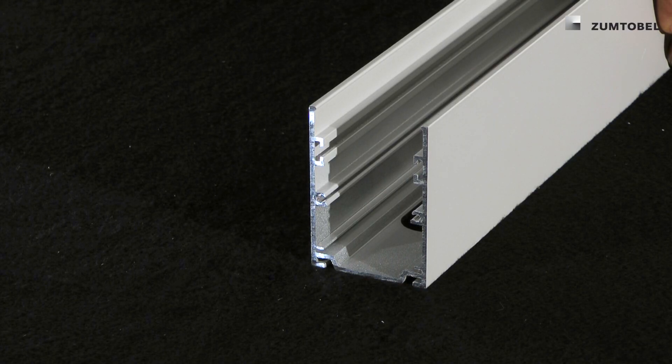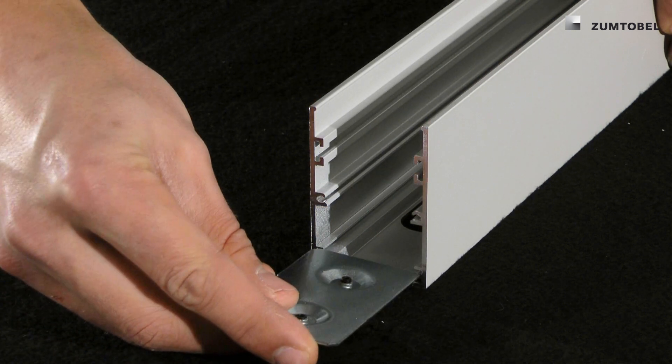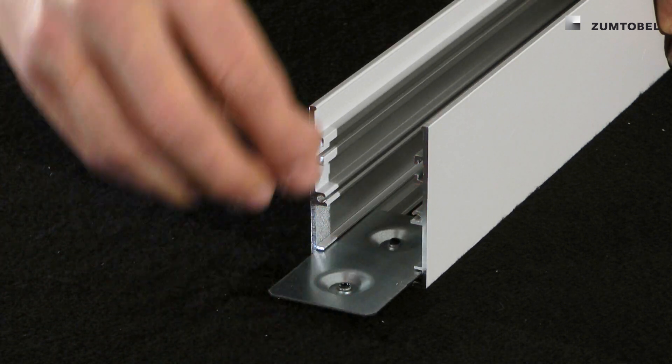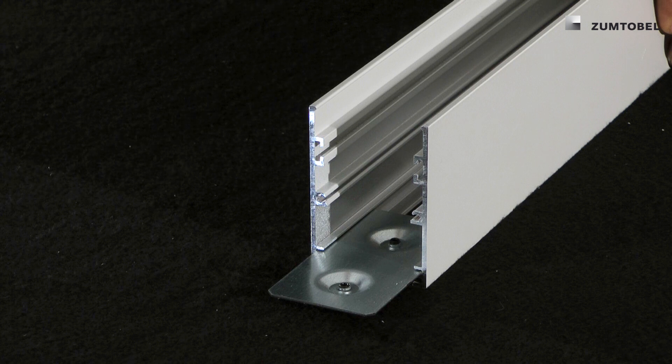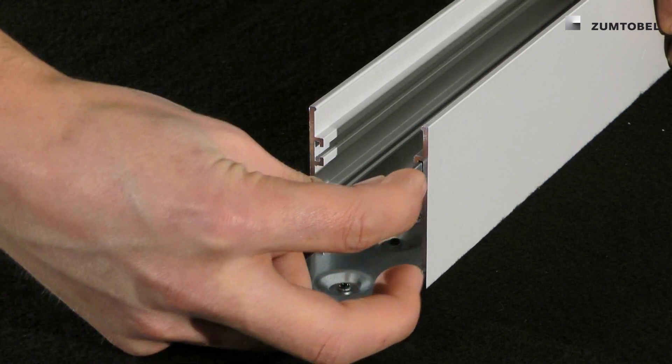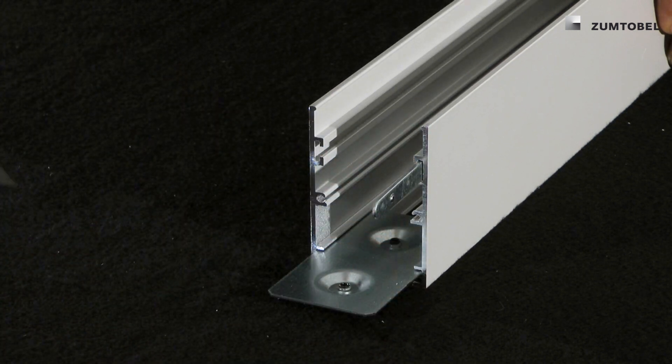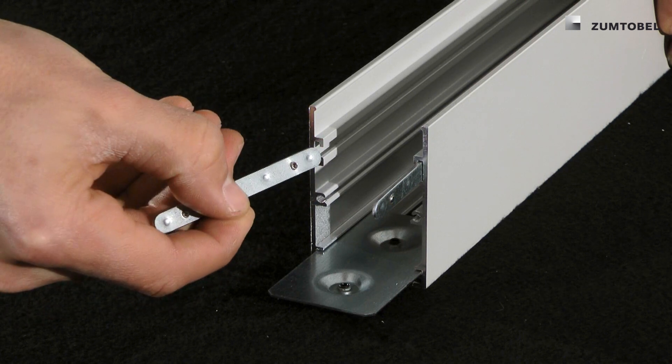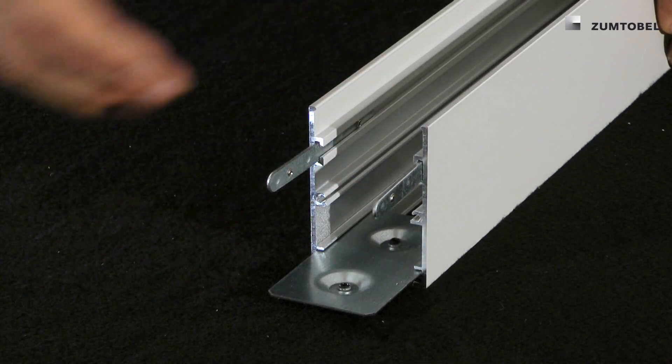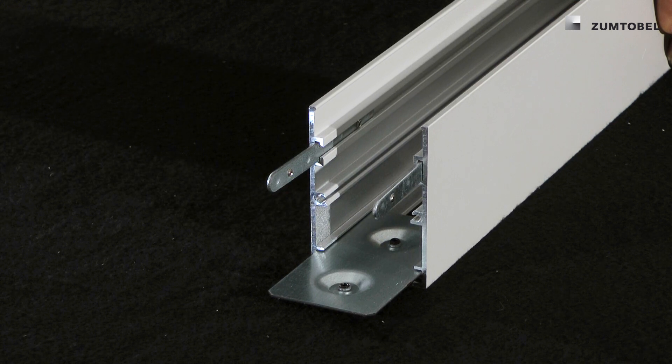To connect the Slotlight Infinity Slim channels to each other, you need the connection set. First of all, you need the plate. Slide it in. Tighten it up. Second, you need the two little pieces on the side. Slide it in. Tighten it up as well and connect the next channel to each other.